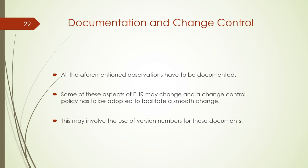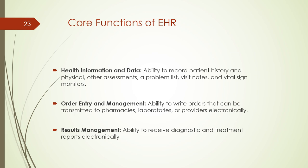Change control has to go with proper documentation. Documentation and changes made to the EHR must happen in a smooth way — there are software tools for version control. The core functions of the EHR include health information and data, order entry and management, and results management. Health information and data is the ability to record patient history, problem list, visit notes, vital signs, lab results, etc. Order entry and management is the ability to write orders to pharmacies and laboratories. Results management is the ability to receive diagnostic and treatment reports electronically, and many times barcodes are used for these processes.